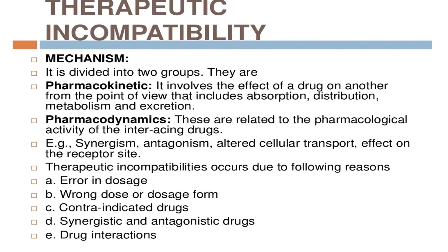Examples of pharmacodynamics include synergism, antagonism, intercellular transport, and effect on the receptor site. Therapeutic incompatibility occurs due to the following reasons: first is error in dosage; second is wrong dose or dosage form; third is contraindicated drug; fourth is synergistic and antagonistic drug; and last is drug interaction.